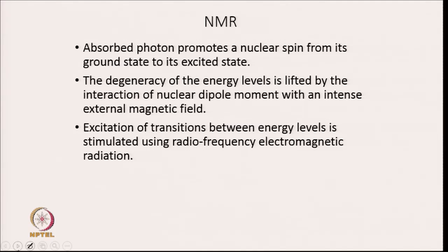You need radio frequency electromagnetic radiation to excite nuclear spin from the ground state level to the excited state. Transition between different energy levels is done using radio frequency electromagnetic radiation. So, two or three things are important: the levels are degenerate, their degeneracy is lifted by the external magnetic field, and you require an external magnetic field to remove the degeneracy. Then transition between the energy levels will be stimulated using radio frequency electromagnetic radiation.